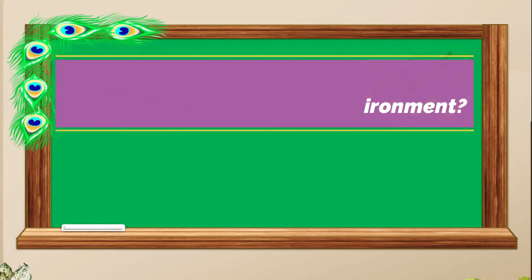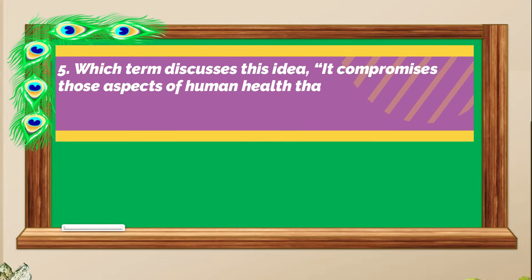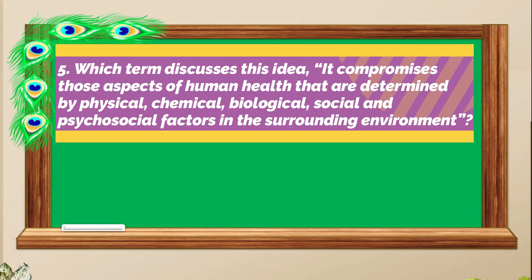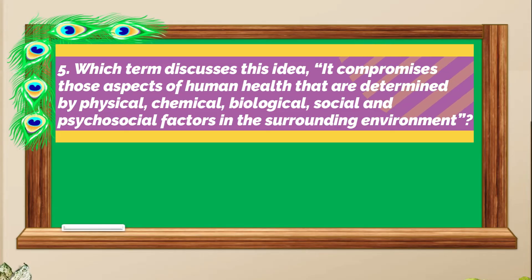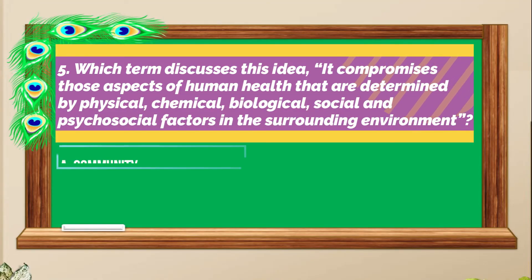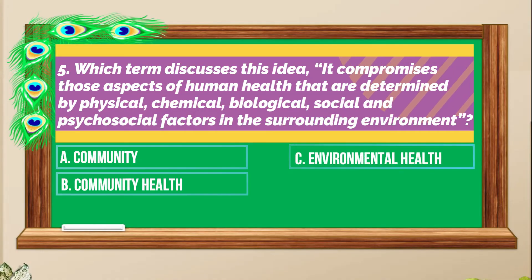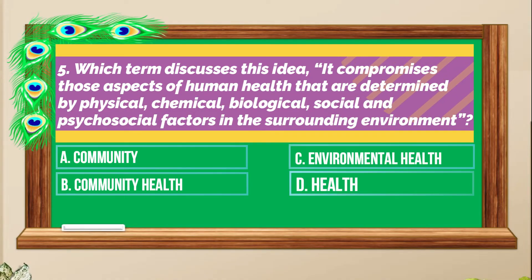And the last question: Which term describes this idea — it comprises those aspects of human health that are determined by physical, chemical, biological, social, and psychosocial factors in the surrounding environment? A. Community, B. Community health, C. Environmental health, D. Health.